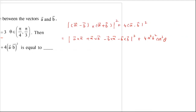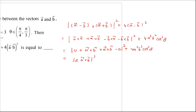So we have zero plus a×b minus b×a, which equals 2(a×b). Squaring that gives 4a²b² sin²θ. Adding the dot product term: 4a²b² sin²θ plus 4a²b² cos²θ. Taking 4a²b² common, we get sin²θ plus cos²θ, which equals 1.